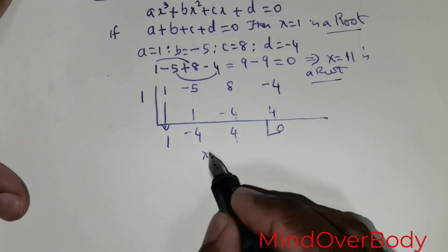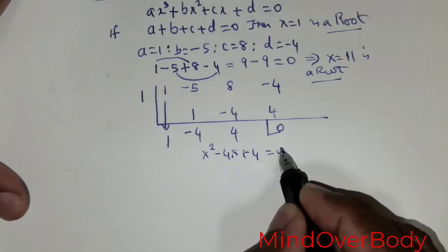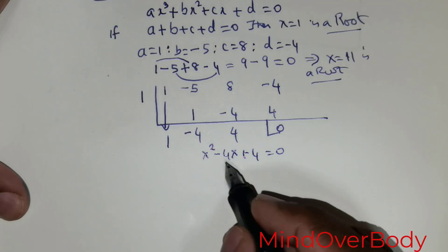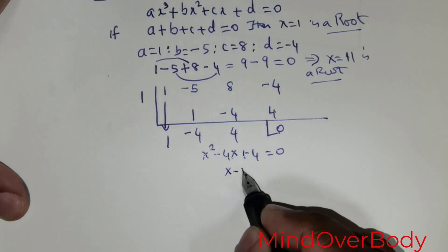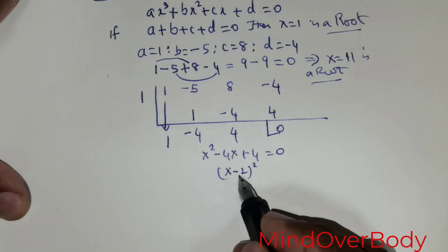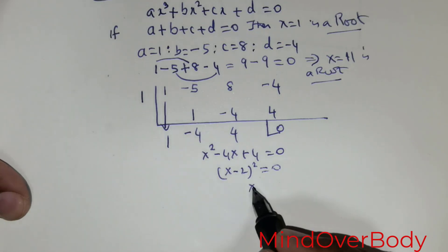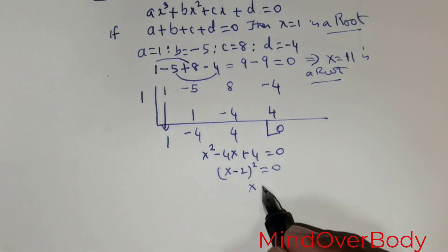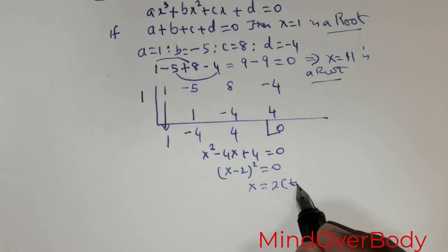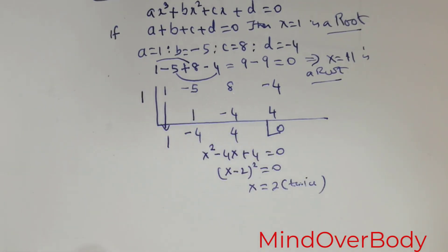The result is 0, so the quotient is x squared minus 4x plus 4 equals 0. This is nothing but x minus 2 raised to the power 2. This means x equals positive 2 is a repeated root — x equals 2 twice. So the total solution is x equals 1 and x equals 2 (multiplicity 2).